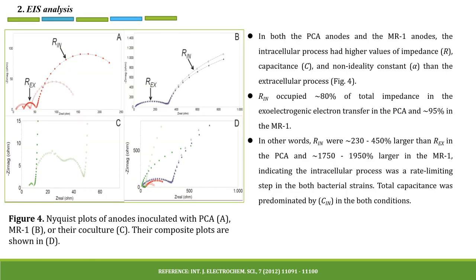The second is EIS analysis. Figure 4 shows the Nyquist plots of anodes: A shows the plot for PCA, B for MR1, C for their co-culture, and D shows their composite plots. In both the PCA anodes and the MR1 anodes, the intracellular process had higher values of impedance R, capacitance C, and non-ideality constant alpha than the extracellular process as shown in figure 4. Intracellular impedance occupied nearly 80% of total impedance in the exo-electrogenic electron transfer in PCA and nearly 95% in MR1. In other words, intracellular impedance was nearly 230–450% larger than extracellular impedance in PCA and nearly 1750–10,150% larger in MR1, indicating the intracellular process was a rate-limiting step in both bacterial strains.